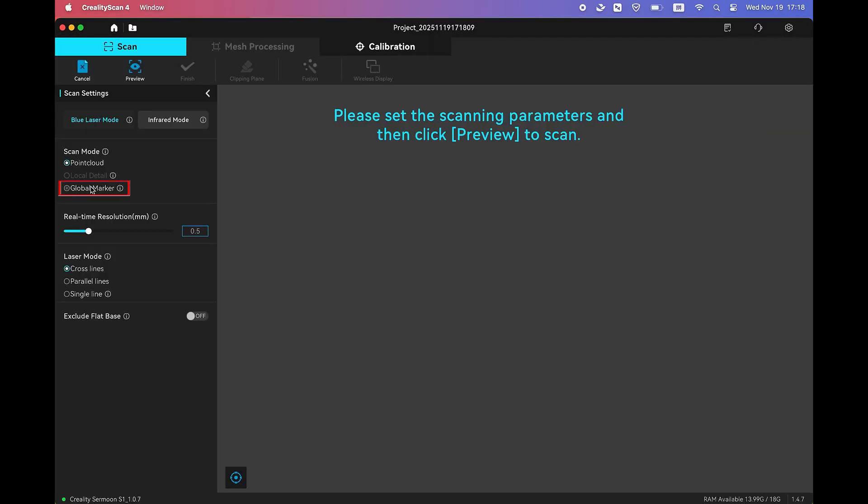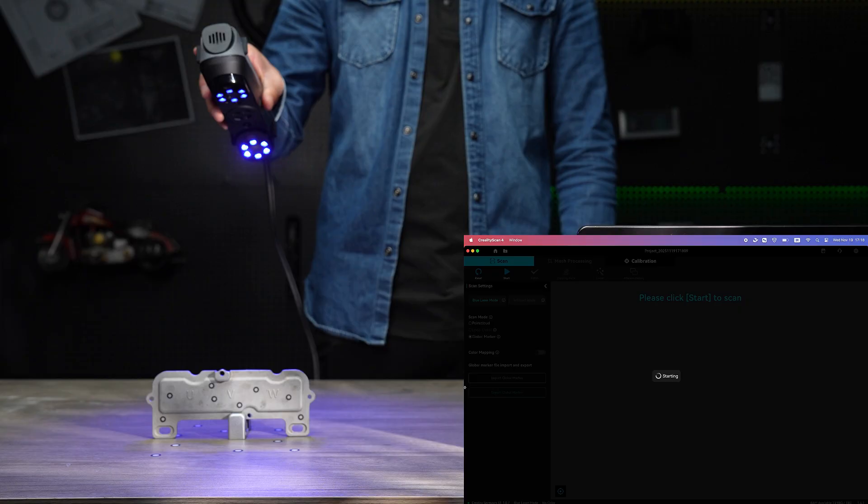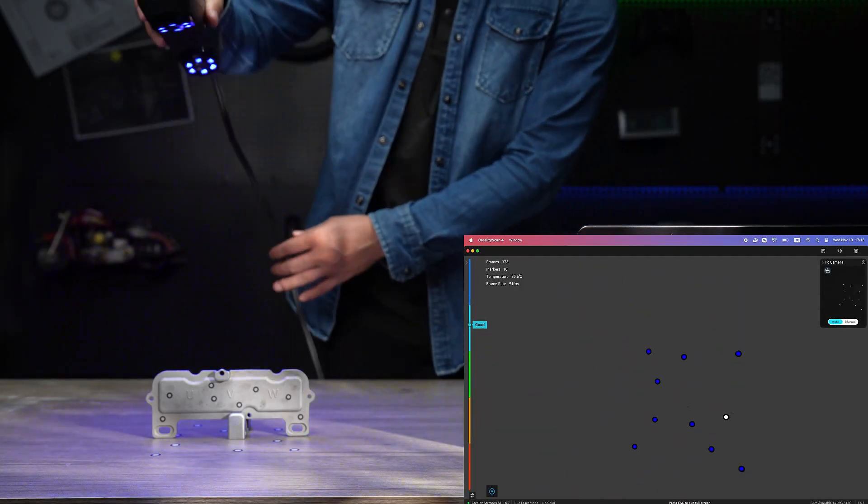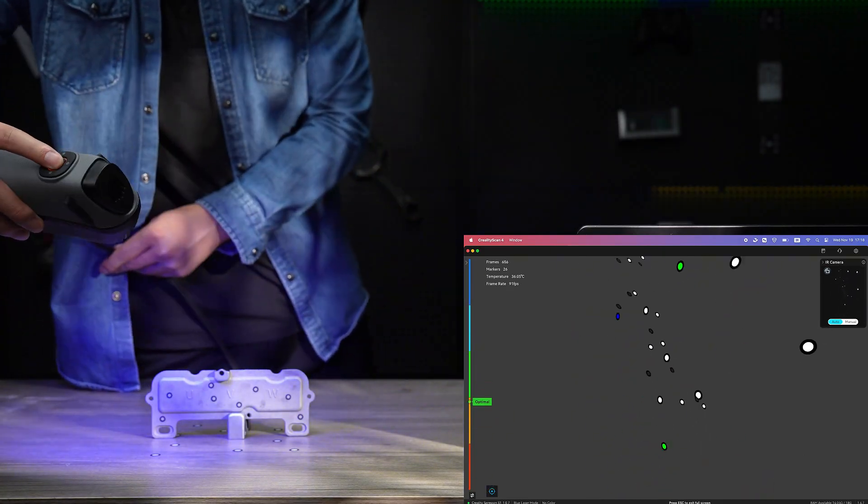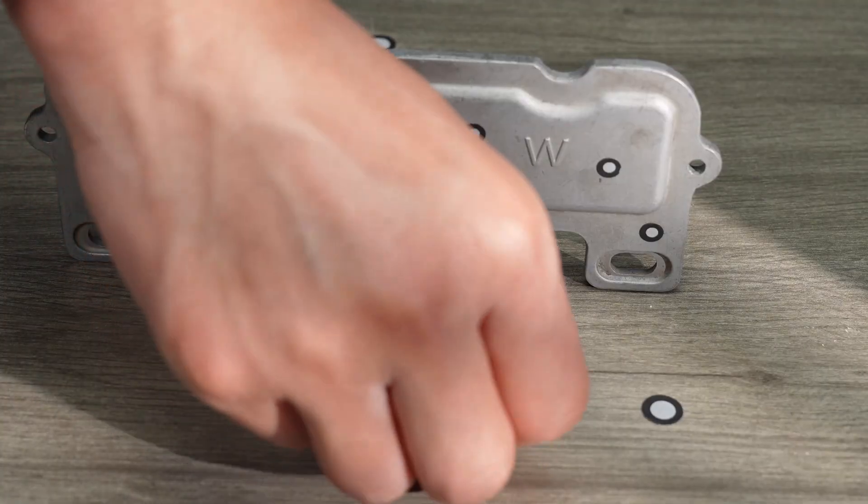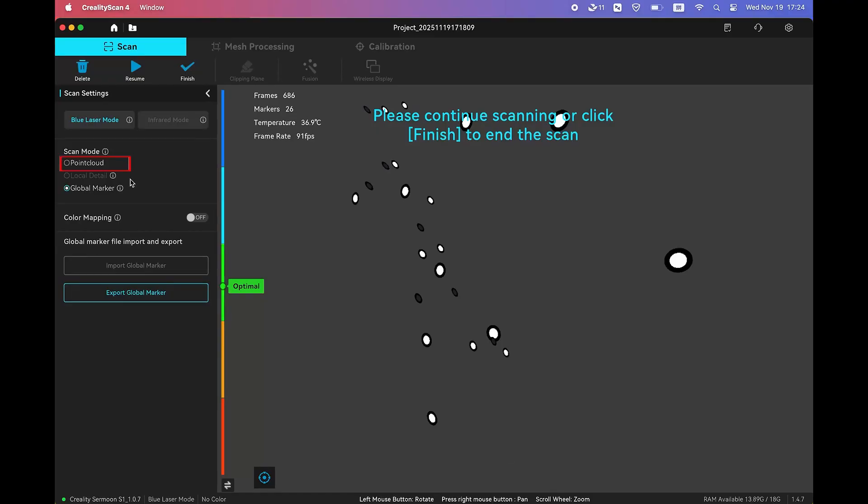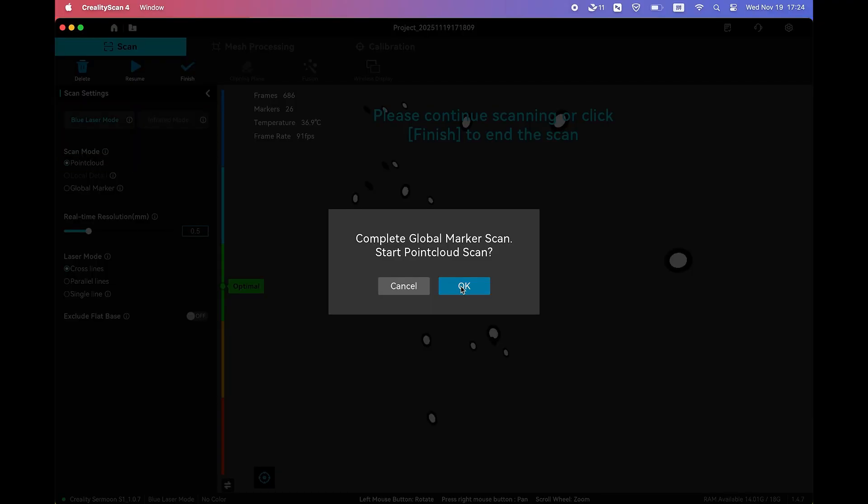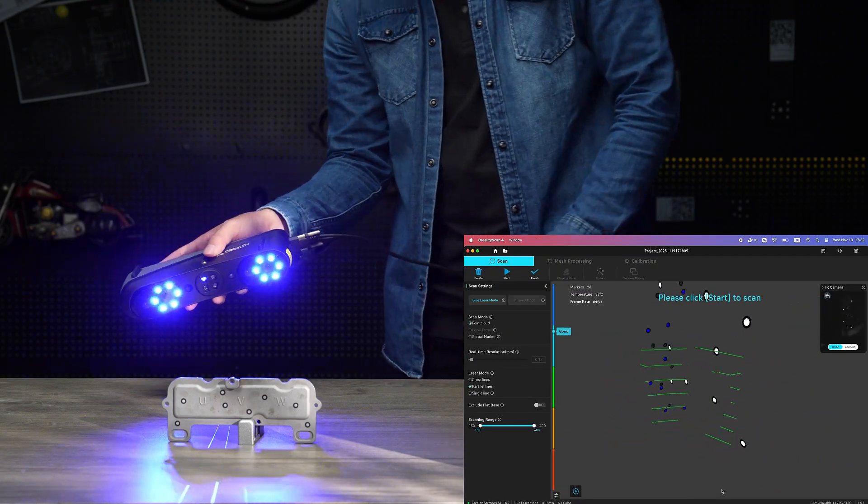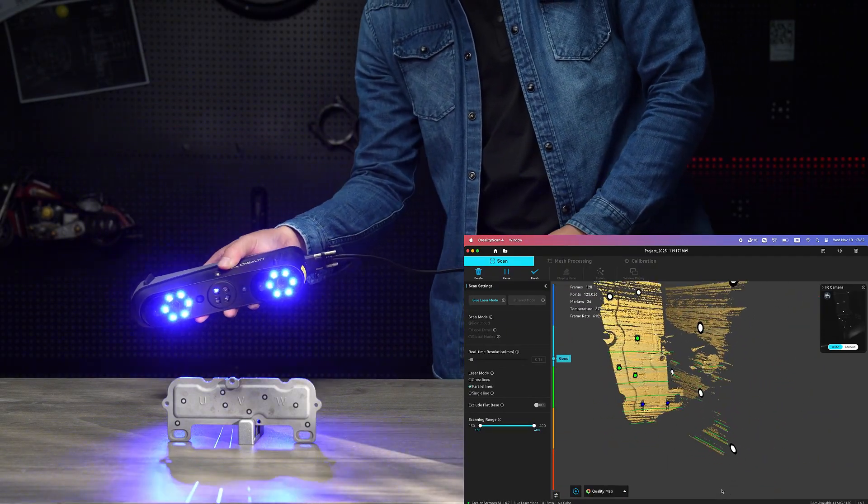And do a scan to capture all the markers on both sides. Then, keep the part standing vertically and start the point cloud scan. Keep your scanning speeds slow and even.